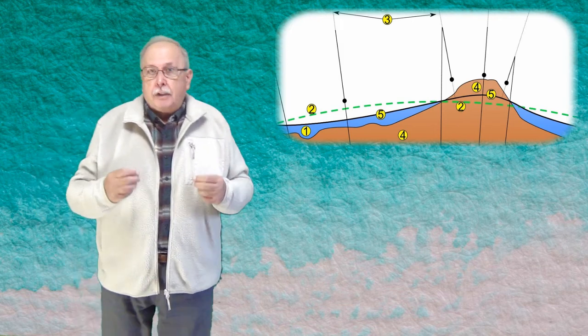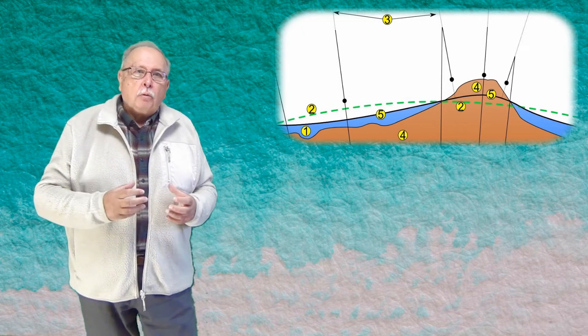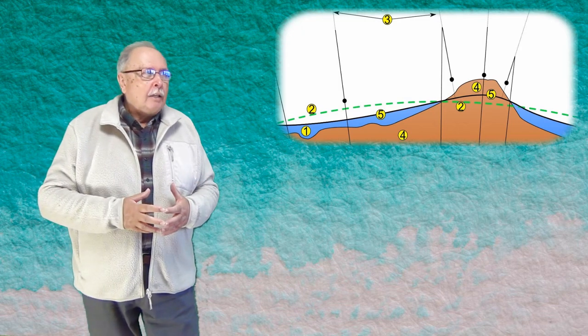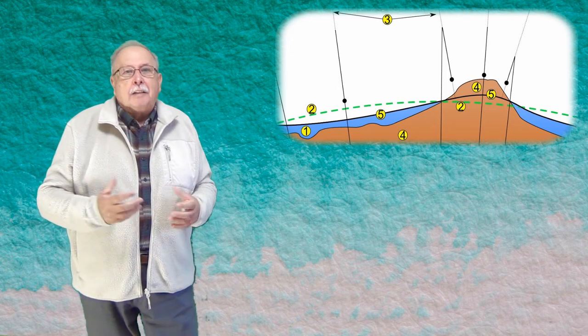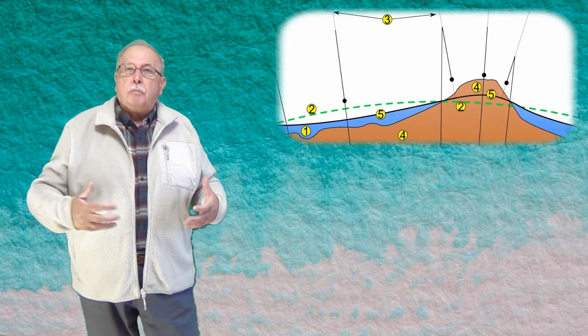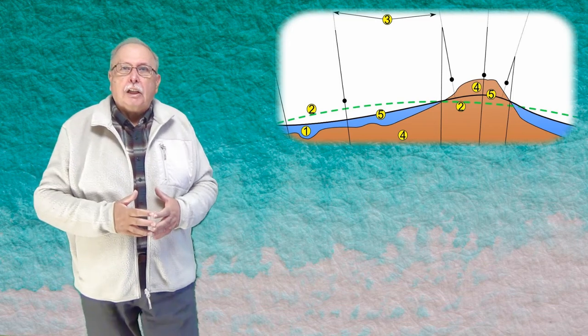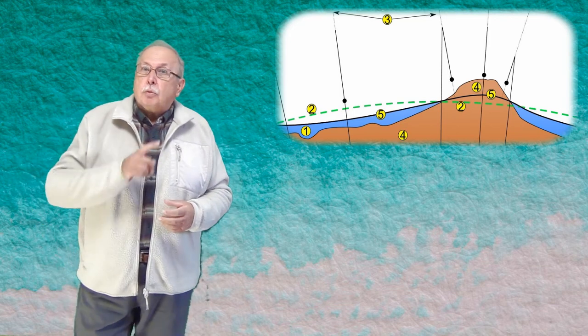Vedeți abaterea în acest desen din Wikipedia. Linia verde punctată este forma suprafeței pe care ar avea-o oceanul planetar în lipsa continentelor. Și puteți vedea, exagerat evident, abaterea de la această formă, pe care o produce câmpul gravitațional al continentelor.